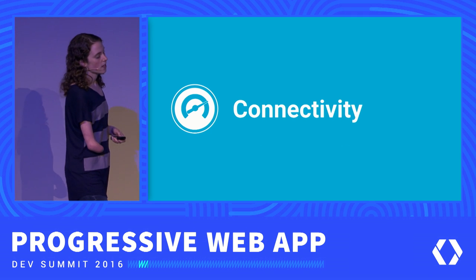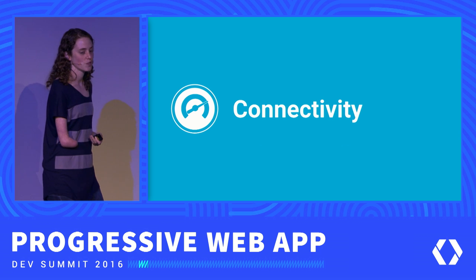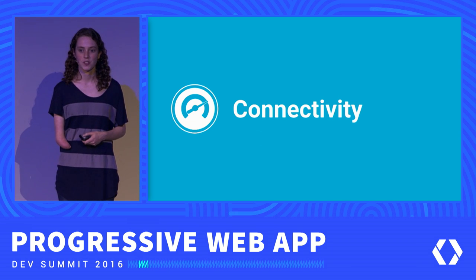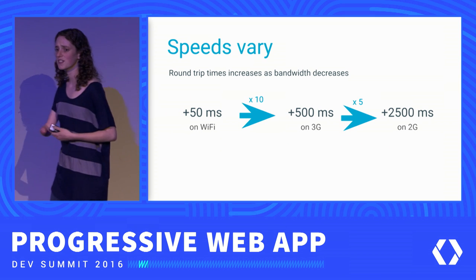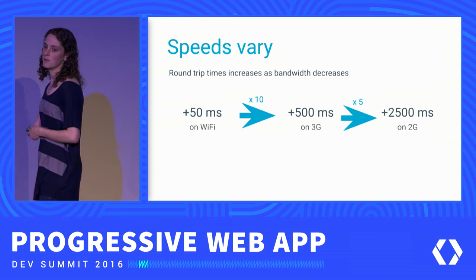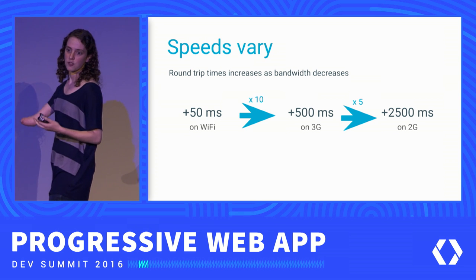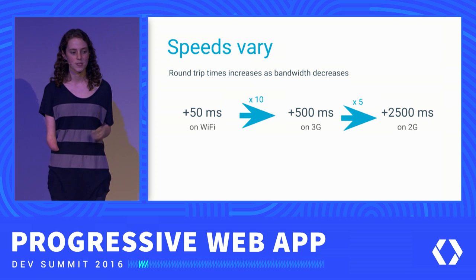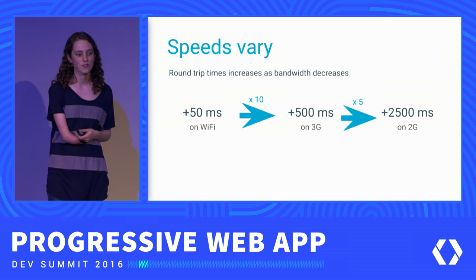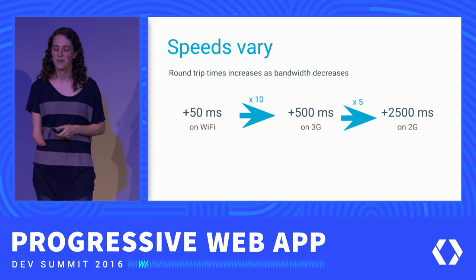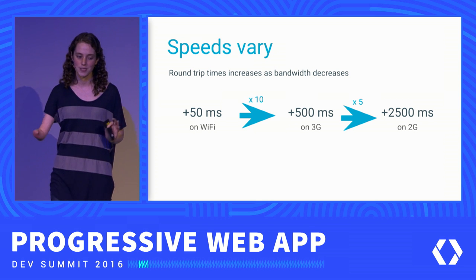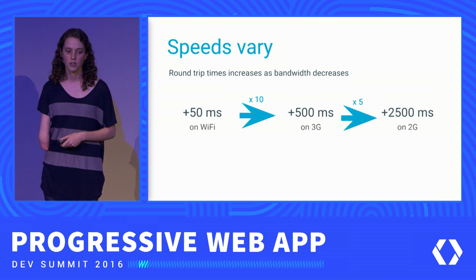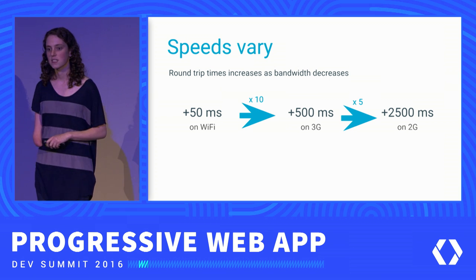Beyond just removing and decreasing the cost that comes with data usage on mobile, connectivity is really important and you need to make sure that things load as quickly as possible. Round trip time — the time between making a request and actually getting a response — varies pretty drastically between connection types. At one extreme, you often see 50 milliseconds round trip times on Wi-Fi. But at the other extreme, you have about 50 times slower on an average 2G network, with 2,500 milliseconds round trip times.